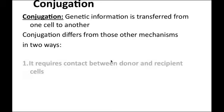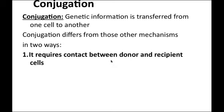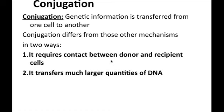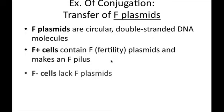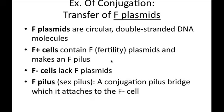Conjugation transfers genetic information from one cell to another, often requiring cells of the same genus and species. It differs from transformation and transduction because the two cells must come into direct physical contact. Conjugation can transfer a large quantity of DNA in the form of plasmids, including fertility plasmids that build pili or conjugation bridges to enable the transfer.